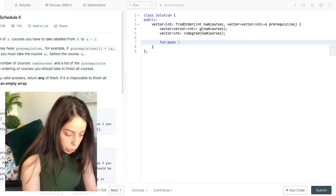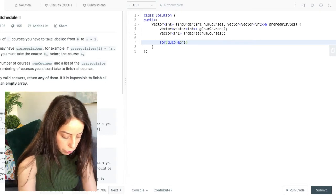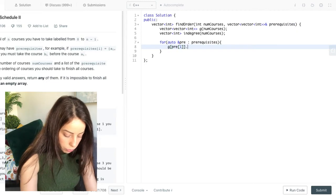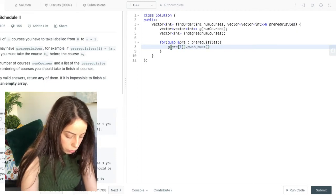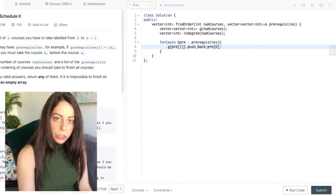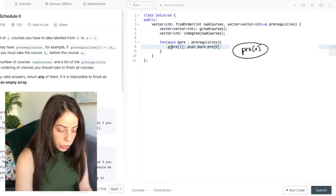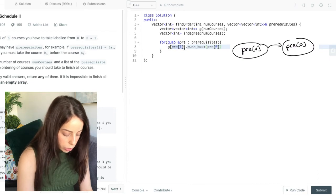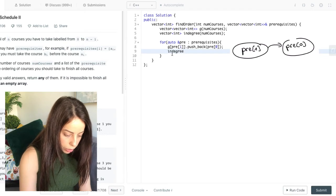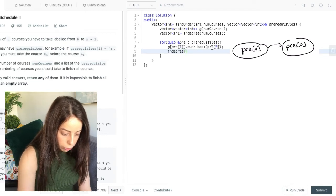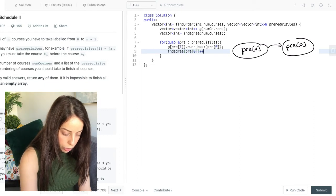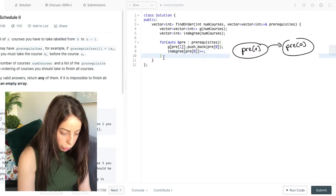Now we want to initialize our graph. So we're going to do that by iterating over the prerequisites array. So for each prerequisite. So our graph is implemented with an adjacency list. So we're basically just adding a neighbor to this node. Next thing we want to do is update the in degree of this node. Because it has a new incoming edge. So we increase its number of incoming edges.